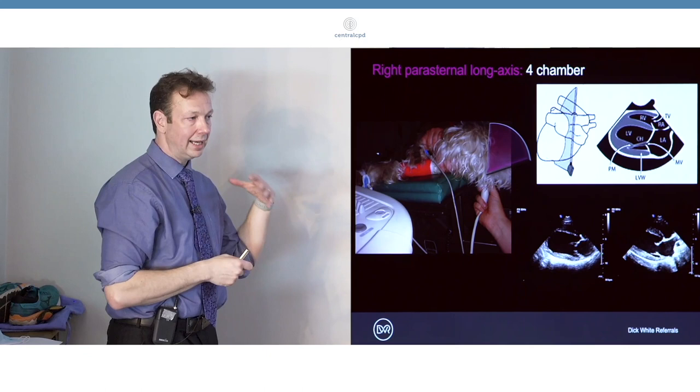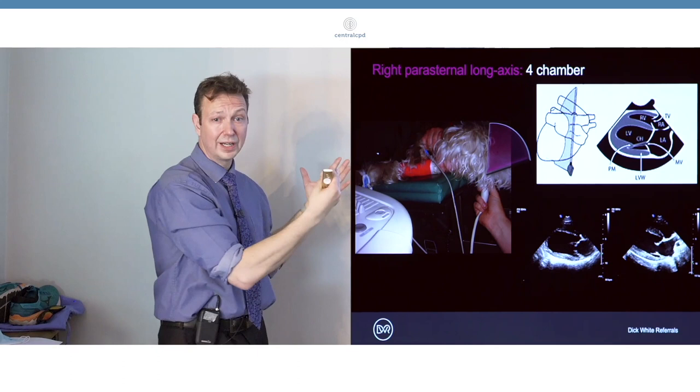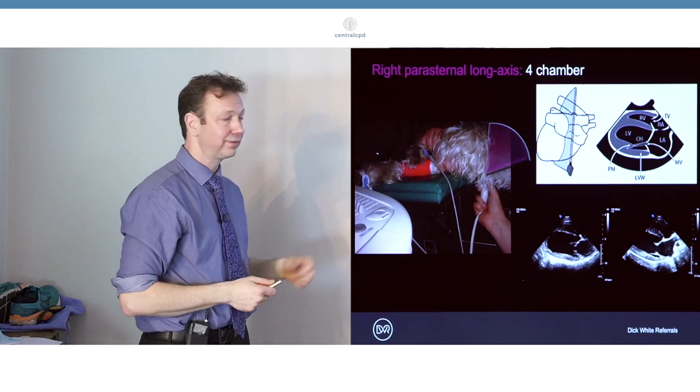As you're gaining confidence, if you're just looking at the atria, why not narrow the sector and just narrow it down to the atria and then just do the same for the ventricles. Then you'll increase your frame rate. A wide sector decreases frame rate.